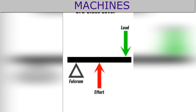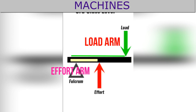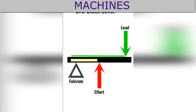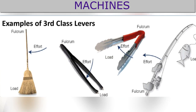In class 3 levers, the effort is in between the load and the fulcrum. Hence, the effort arm is always shorter than the load arm. Mechanical advantage and velocity ratio are less than 1 in all class 3 levers since the effort arm is shorter than the load arm. Sugar tongs and foot treadle are examples of class 3 levers. Since they have mechanical advantage less than 1, they all act as speed gainers.